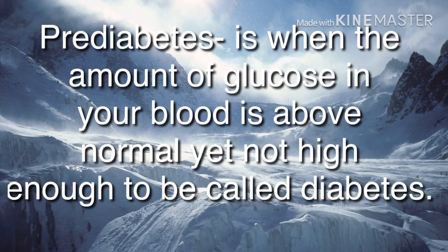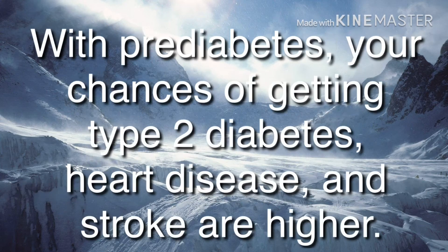Prediabetes is when the amount of glucose in your blood is above normal, yet not high enough to be called diabetes. With prediabetes, your chances of getting type 2 diabetes, heart disease, and stroke are higher.